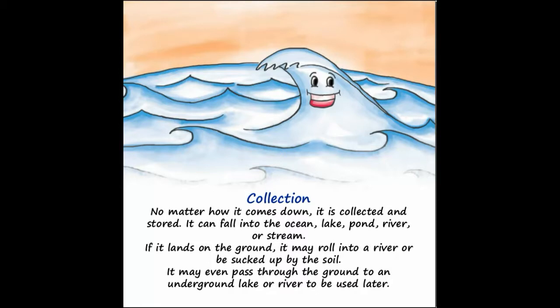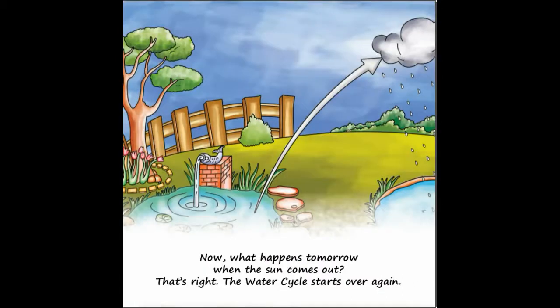Collection. No matter how it comes down, it is collected and stored. It can fall into the ocean, lake, pond, river or stream. If it lands on the ground, it may roll into a river or be sucked up by the soil. It may even pass through the ground to an underground lake or river to be used later. Now, what happens tomorrow when the sun comes out? That's right, the water cycle starts over again.